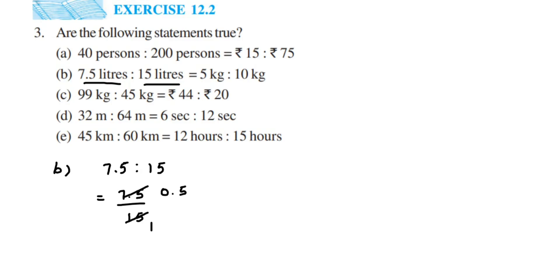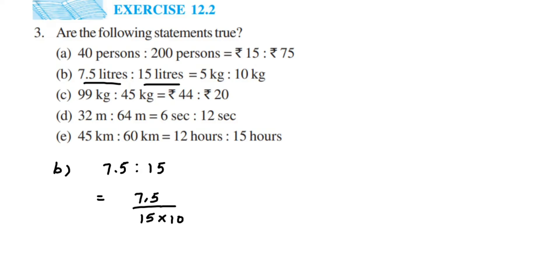Since we have a decimal in the numerator with one digit after the decimal point, we can remove the decimal point and multiply the denominator by 10. So 7.5 by 15 becomes 75 by (15 × 10), giving 75 by 150. Cancelling in the 15 table: 15 fives are 75, and then 5 ones are 5, 5 twos are 10 — so we get 1 by 2. The ratio is 1 is to 2.